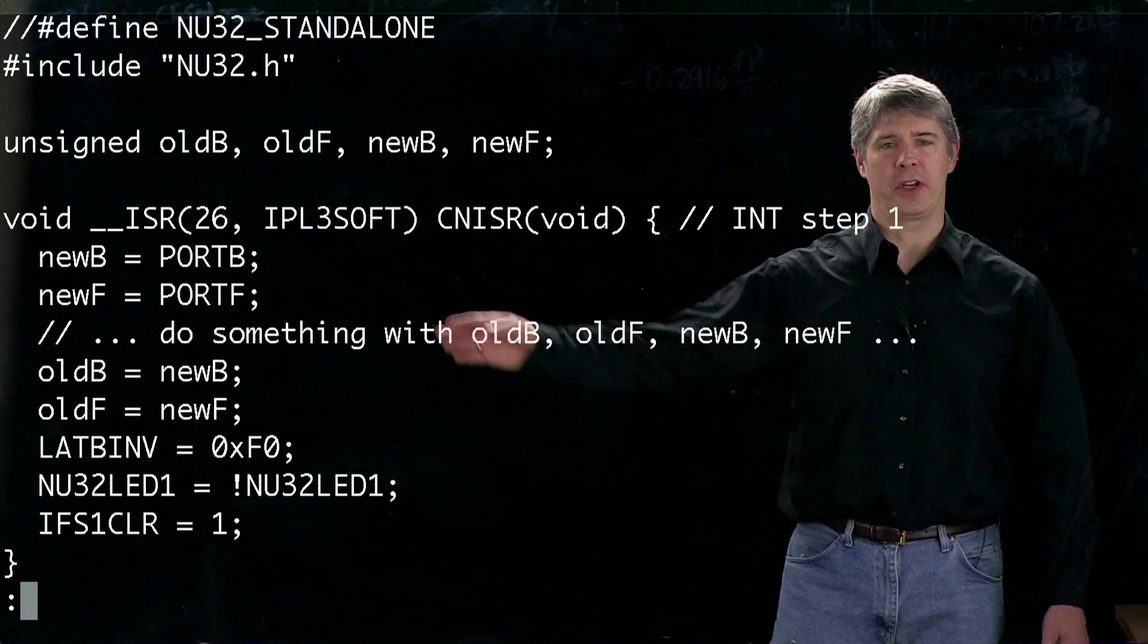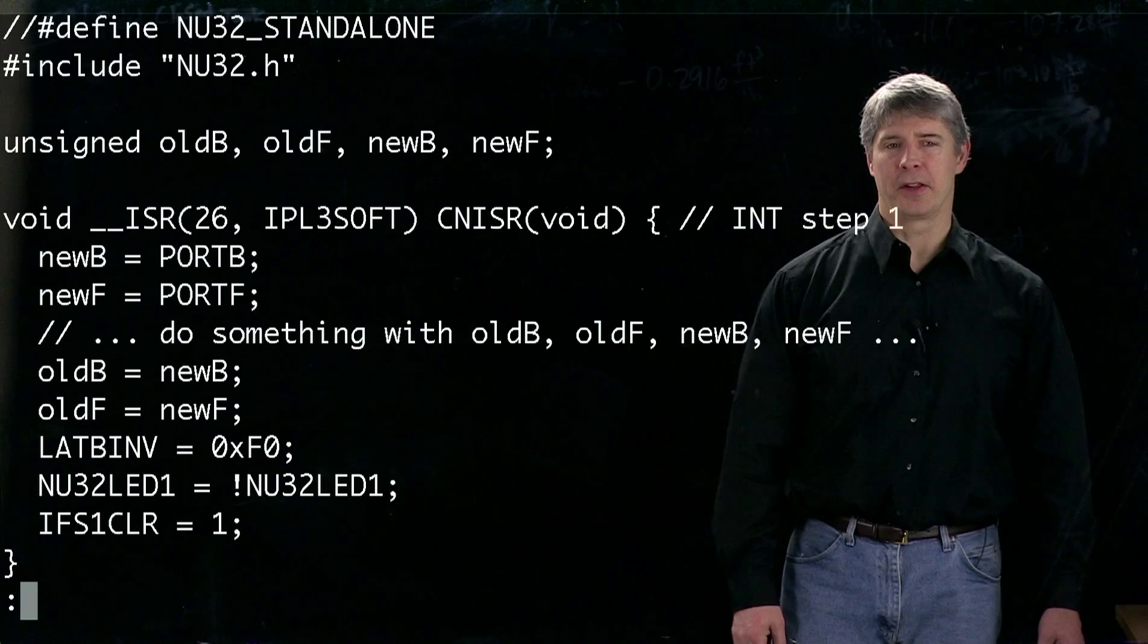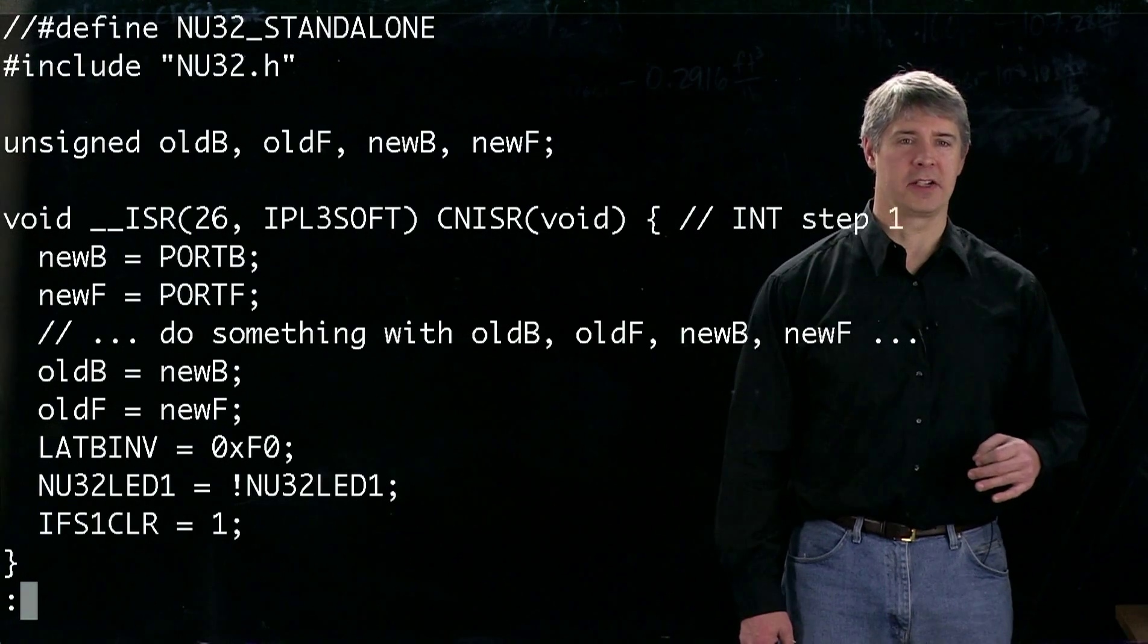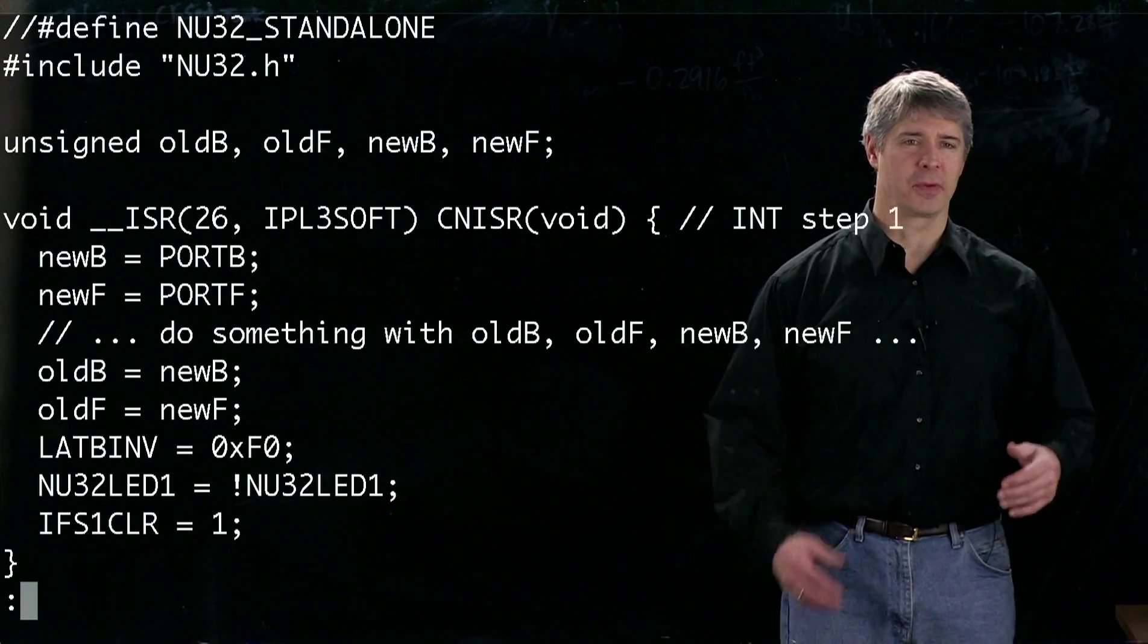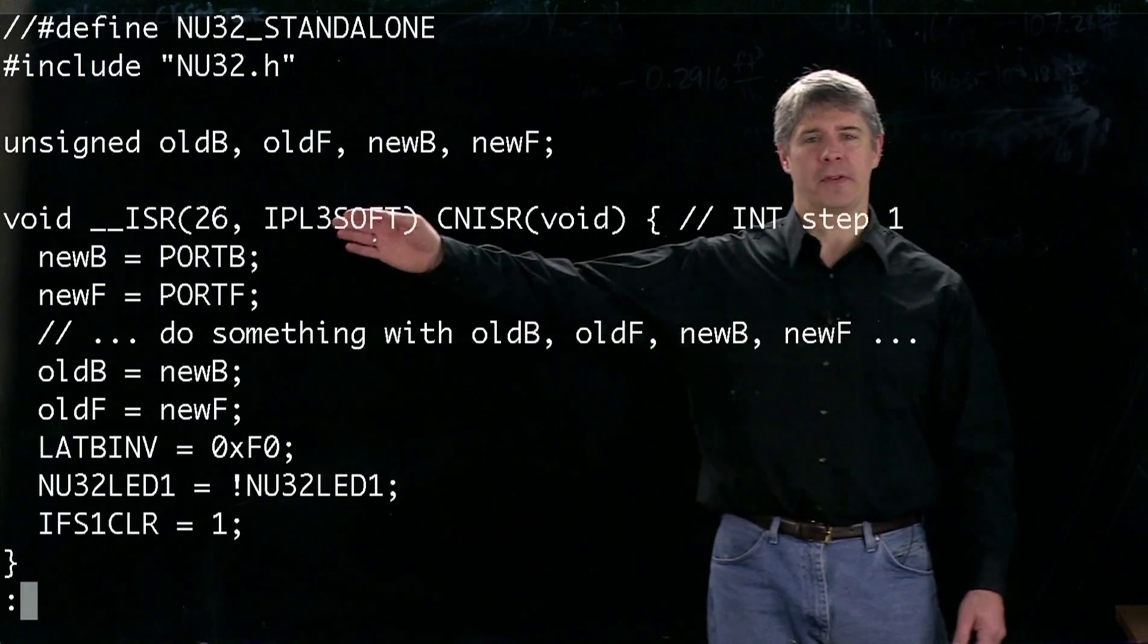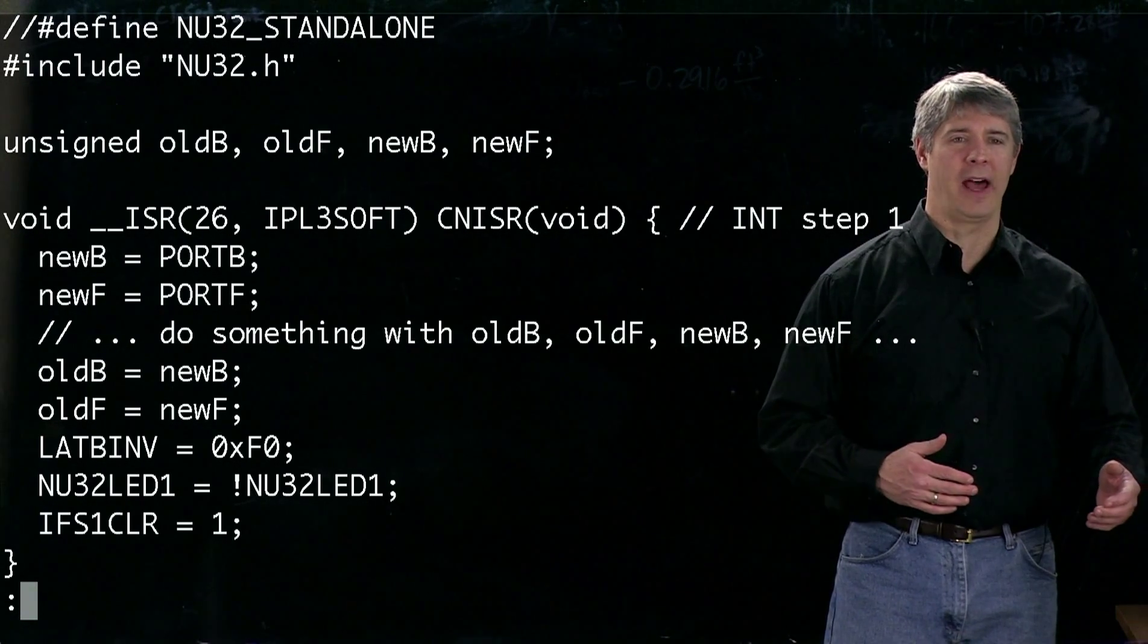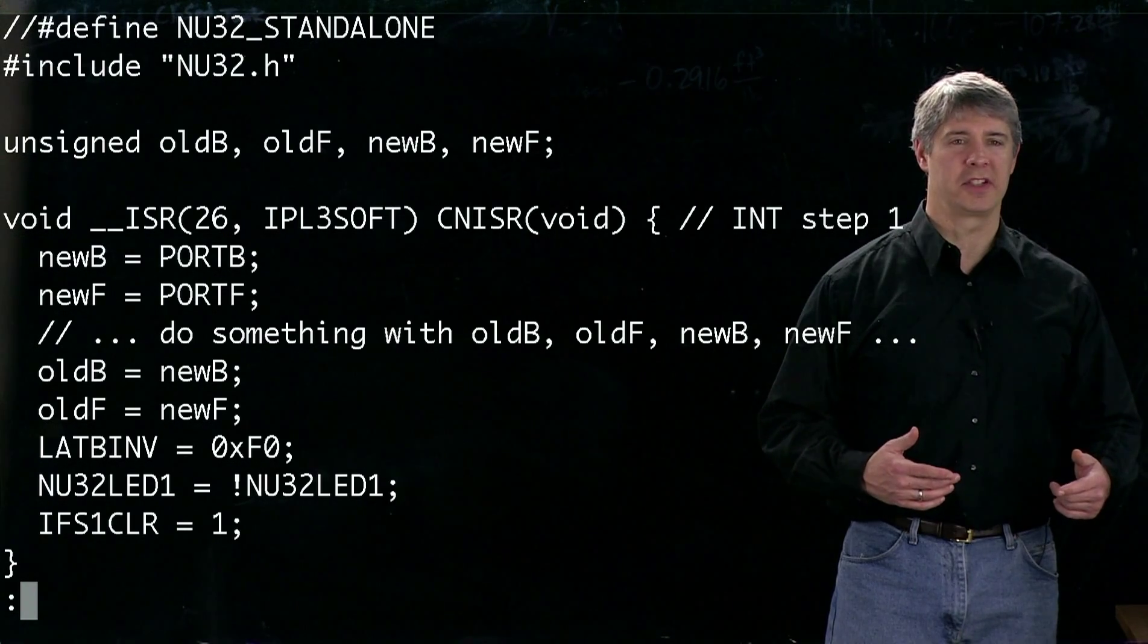The first thing we do in the interrupt service routine is read from port B and port F. The reason is that pins on port B and port F are in the change notification scan, and to properly clear the interrupt for change notification, we have to read all of the pins involved. Now we've got the new values on port B and port F, and we can compare them with the old values oldB and oldF. That's the only way we can tell which pins generated the interrupt.